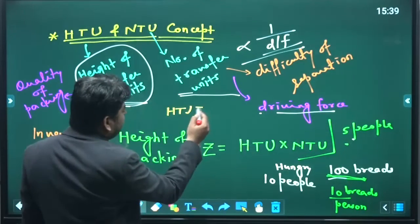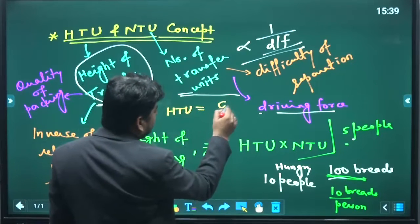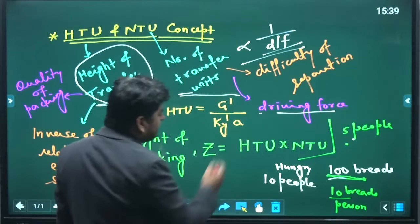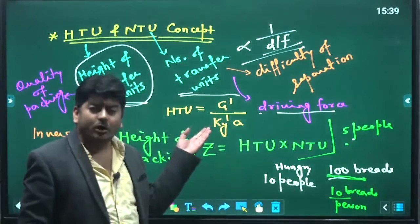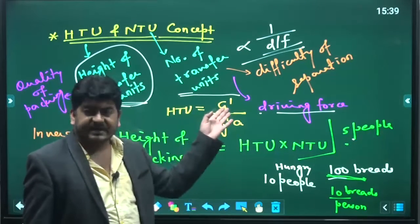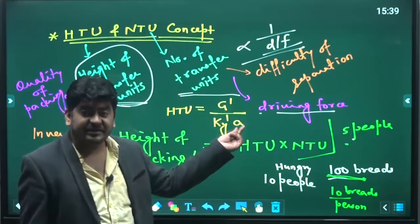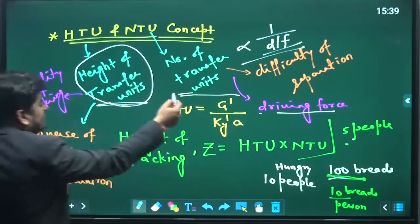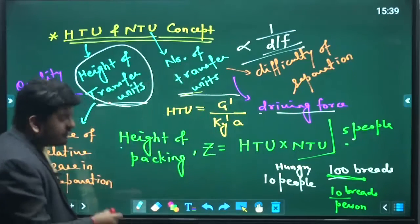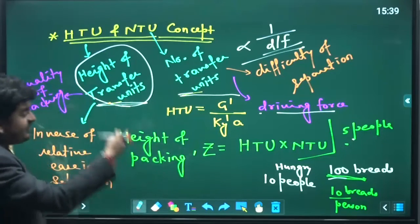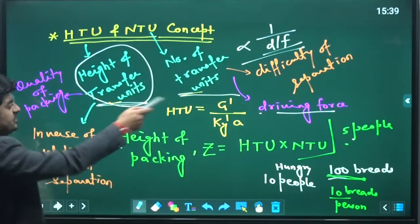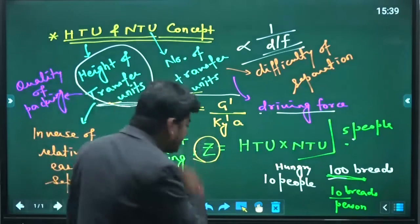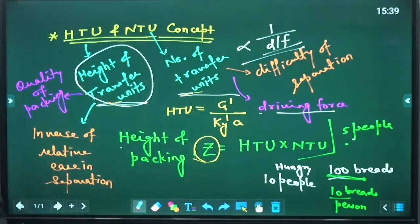If you know HTU is generally, if we talk about the gas, G dash over k'y dash into A, where this is Colburn mass transfer coefficient, gas mass velocity, A is the specific interfacial area. So if specific interfacial area is large, then HTU has to be small. So you can understand the same thing from our question also.